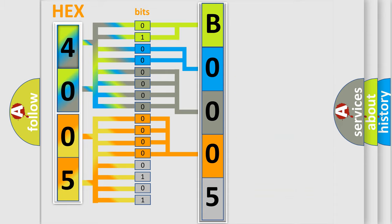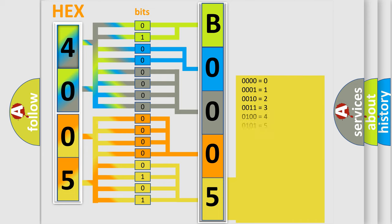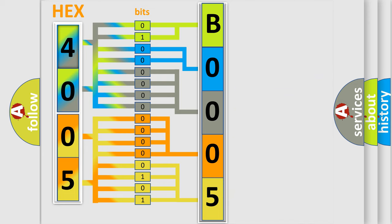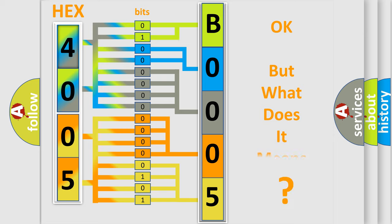A single byte conceals 256 possible combinations. We now know in what way the diagnostic tool translates the received information into a more comprehensible format. The number itself does not make sense to us if we cannot assign information about what it actually expresses.